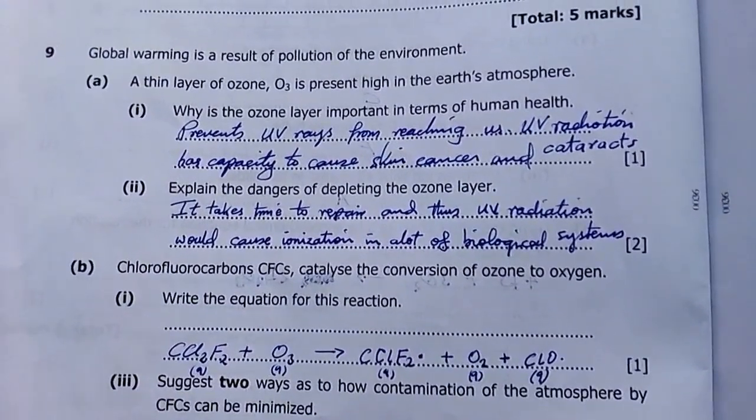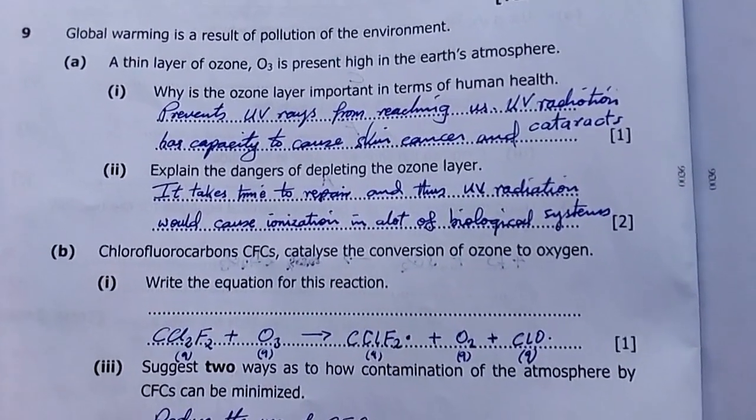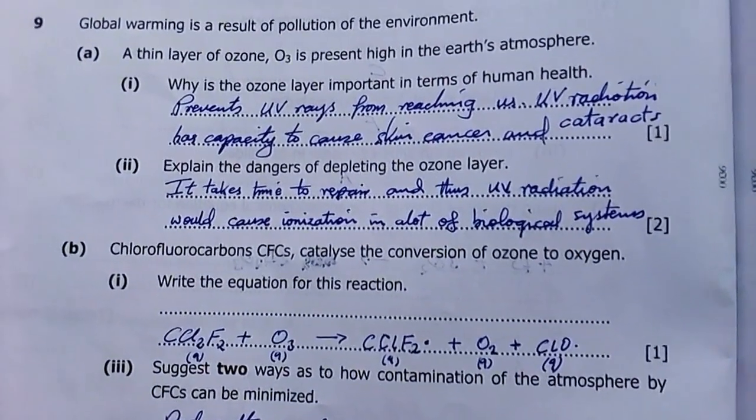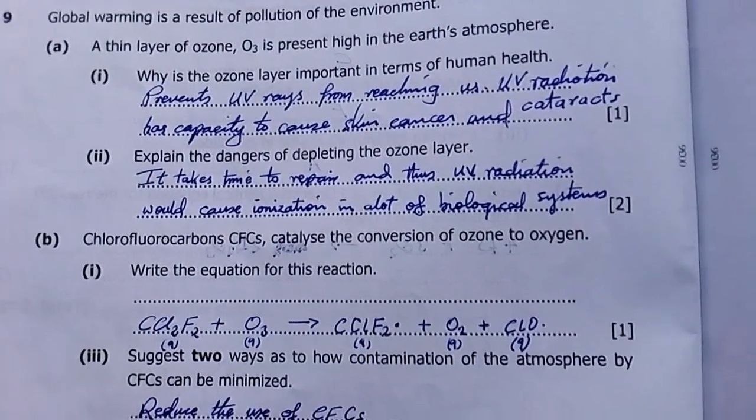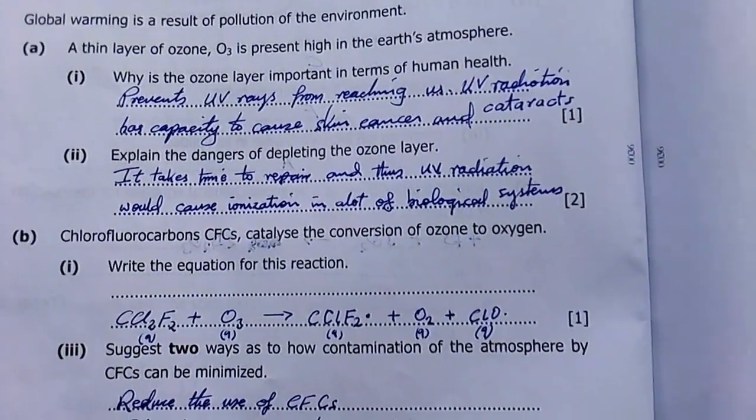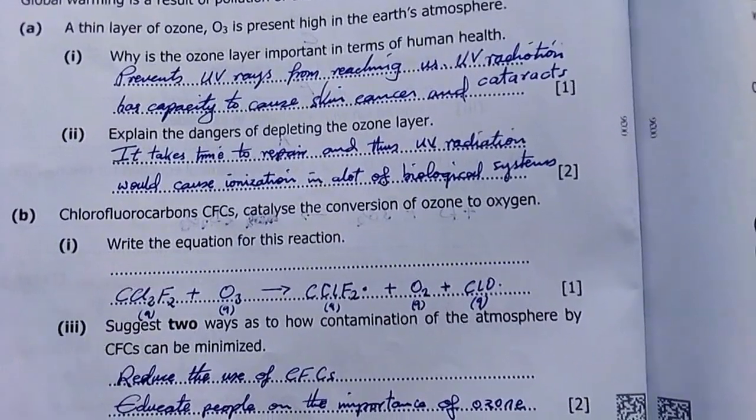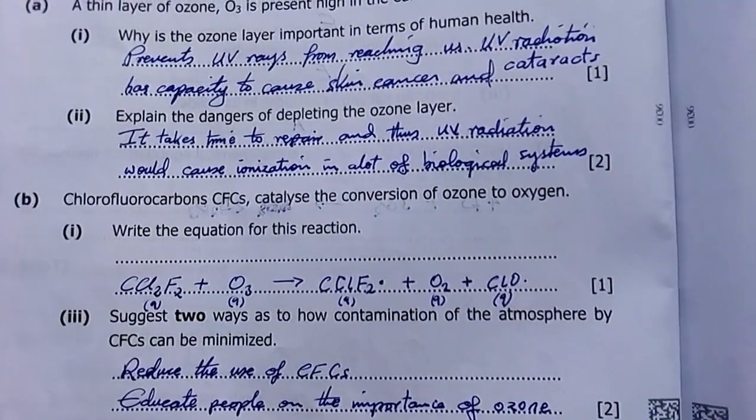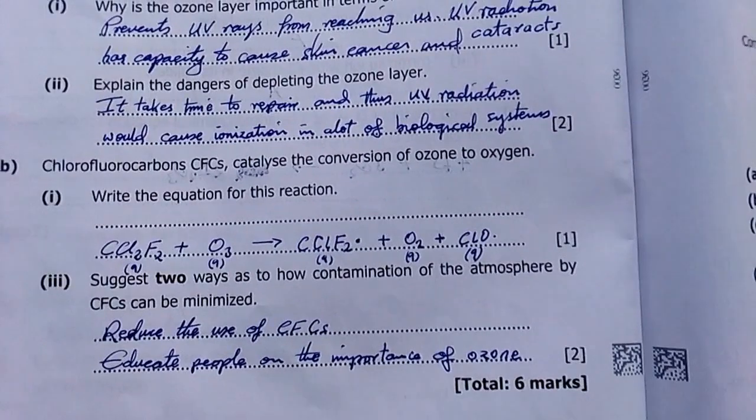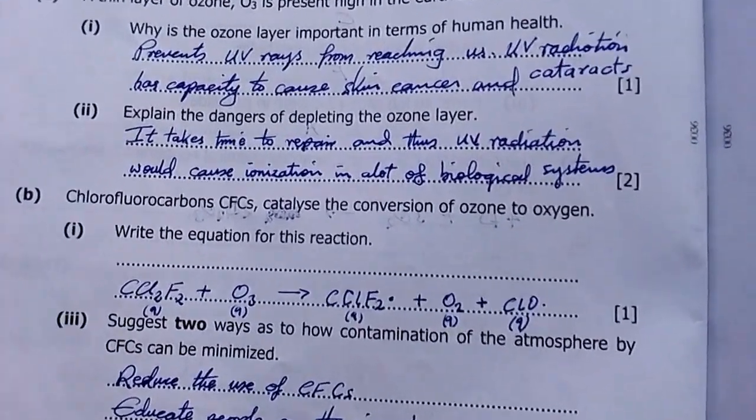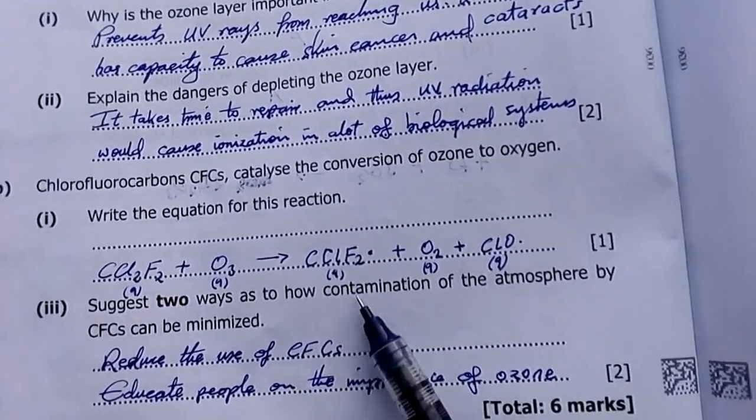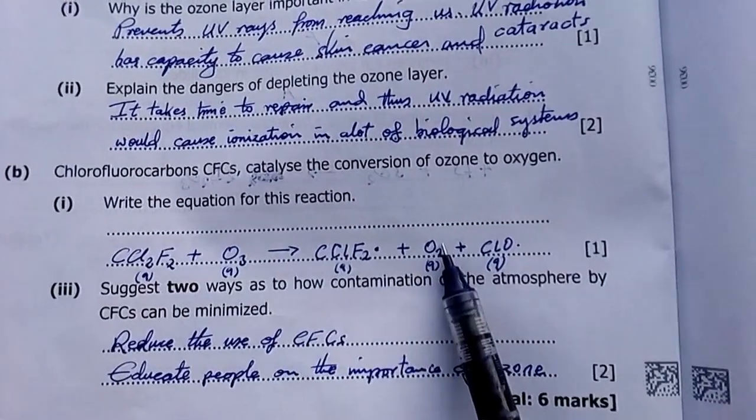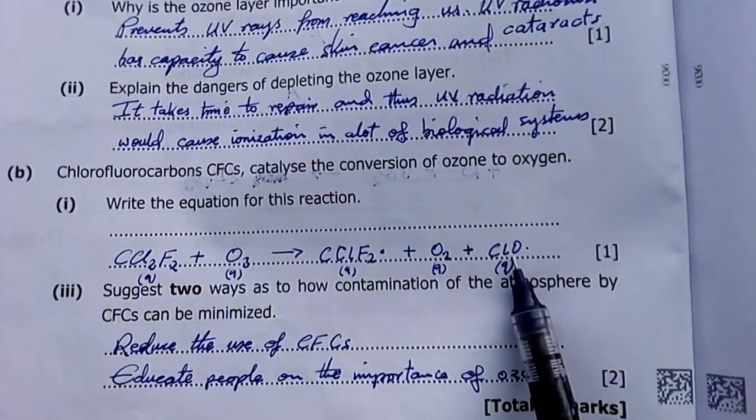Chlorofluorocarbons, CFCs, catalyze the conversion of ozone to oxygen. Write the equation for this reaction. I've put an example of 2-chloro-2-fluoromethane plus trioxygen. It gives you a radical like this guy here, and oxygen gas, and also this radical here.